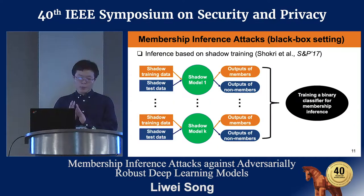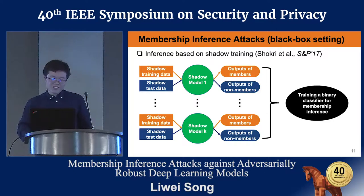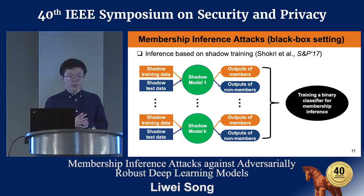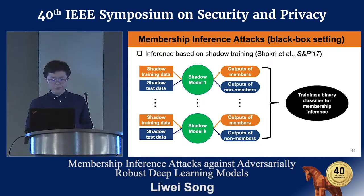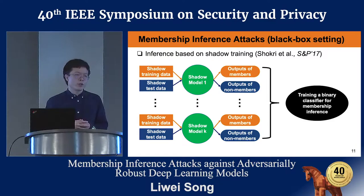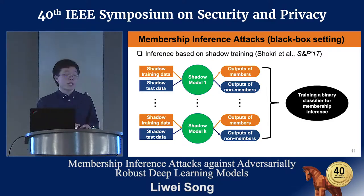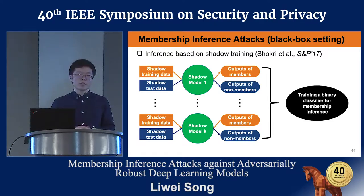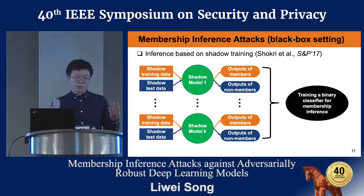Now I'll talk about our detailed membership inference attack. First, let's look at the Shokri et al. paper using the shadow training technique to perform membership inference. The process works by first training many shadow models to simulate the behavior of the target model. Then we collect the outputs of shadow models on both shadow training data and shadow test data. Finally, we use those outputs to train a binary classifier, since membership inference is a binary classification task.